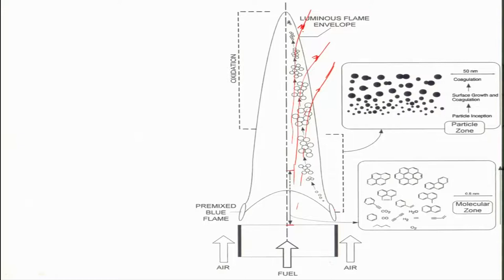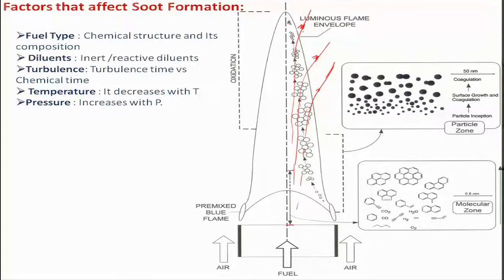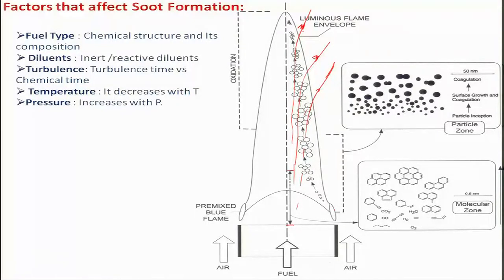We need to see what parameters govern particle size and its distribution. We have already discussed the type of fuel: aliphatic compounds and higher hydrocarbons are more prone to soot formation than lower hydrocarbons. Diluents also affect soot — they can be inert or reactive. It has been found that CO₂ as a diluent decreases soot formation, but adding helium as a diluent actually increases it.